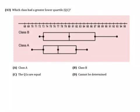Question number 43, which class had a greater lower quartile, quartile 1? So this shows two classes, class A and class B, and we're comparing their quartile 1s.